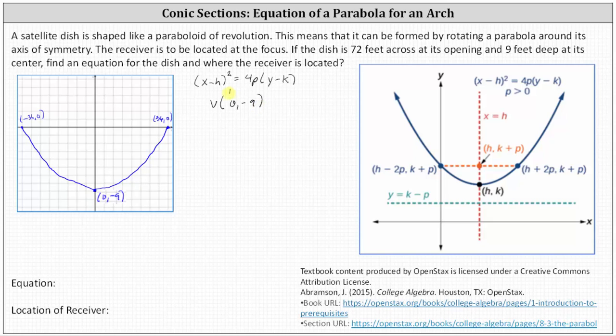And now to finalize our equation, we need to find 4p or p. We can do this using either of the two x-intercepts. Because they're on the parabola, they must satisfy the equation. Let's go ahead and use the x-intercept on the right of (36, 0).